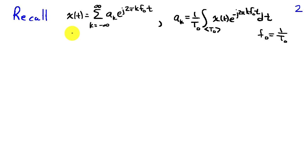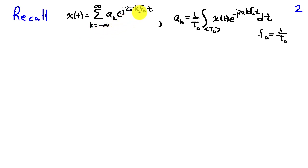Recall that we may write a signal in a Fourier series representation as x of t equal to the sum from k equals minus infinity to infinity of a_k times e to the j 2 pi k f-naught t, where f-naught is the fundamental frequency of the signal and that's the inverse of the fundamental period.